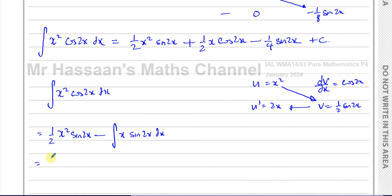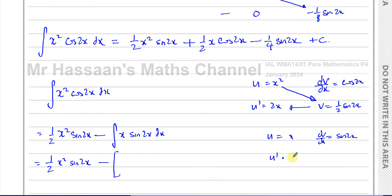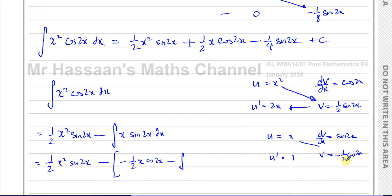This is again a product of two separate functions, so we apply integration by parts again. Minus — now integrating x sine 2x: u = x, dv/dx = sine 2x, so u' = 1, and v = minus a half cosine 2x. That gives minus a half x cosine 2x, minus the integral of 1 times minus a half cosine 2x dx, which becomes plus a half cosine 2x dx.